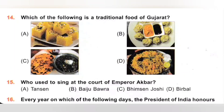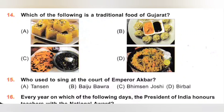14th. Which of the following is a traditional food of Gujarat? A. Dhokla, B. Momos, C. Makki ki Roti and Sarson ka Saag, D. Biryani. Dhokla is a traditional dish of Gujarat. Option A is the correct answer.